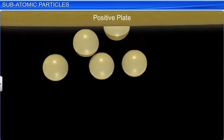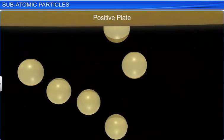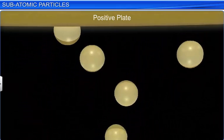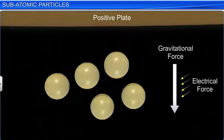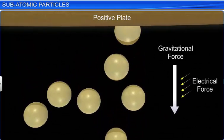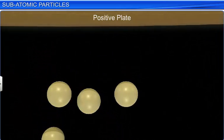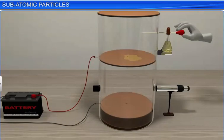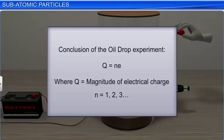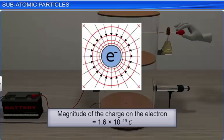The X-rays displaced electrons from air molecules, which negatively charged the oil droplets. On applying voltage to the upper positive plate, the charged oil droplets got attracted towards it against gravitational and electrostatic forces. Millikan then varied the voltage to strike a balance between the acting forces and to make the oil drop stationary. He then calculated the charge on the droplet from the mass of the oil droplet and the charge on the plate. He found that the magnitude of electrical charge q on the droplets is always an integral multiple of the electrical charge e, that is q = ne.